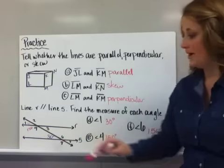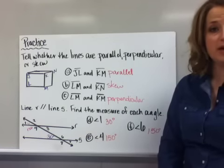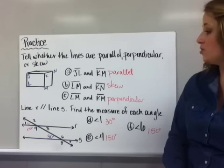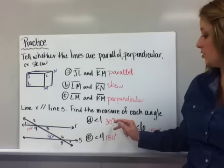You're given that down here is 30 degrees. So angle 1, if I look up at angle 1, that is a corresponding angle and we know that corresponding angles of parallel lines cut by a transversal are congruent. So those are 30 degrees.